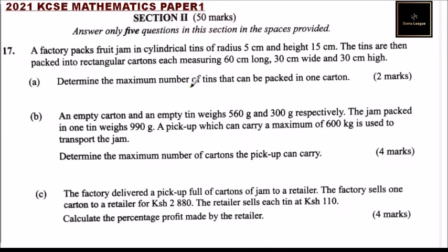Question number 17: A factory packs fruit jam in cylindrical tins of radius 5 centimeter and height 15 centimeter. The tins are then packed into a rectangular carton measuring 60 centimeter long, 30 centimeter wide, and 30 centimeter high. Determine the maximum number of tins that can be packed in one carton.